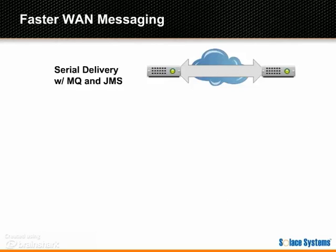With most software messaging products like JMS and MQ, throughput is throttled by round-trip time because they wait for recipients to acknowledge receipt of each message.